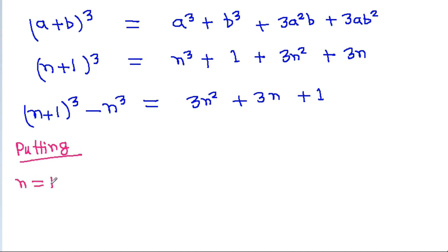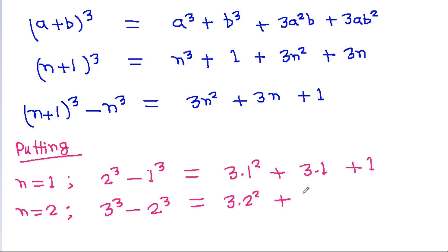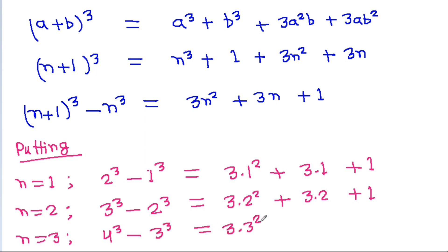Putting n equal to 1: 2³ minus 1³ equals 3(1²) plus 3(1) plus 1. Putting n equal to 2: 3³ minus 2³ equals 3(2²) plus 3(2) plus 1. Putting n equal to 3: 4³ minus 3³ equals 3(3²) plus 3(3) plus 1.